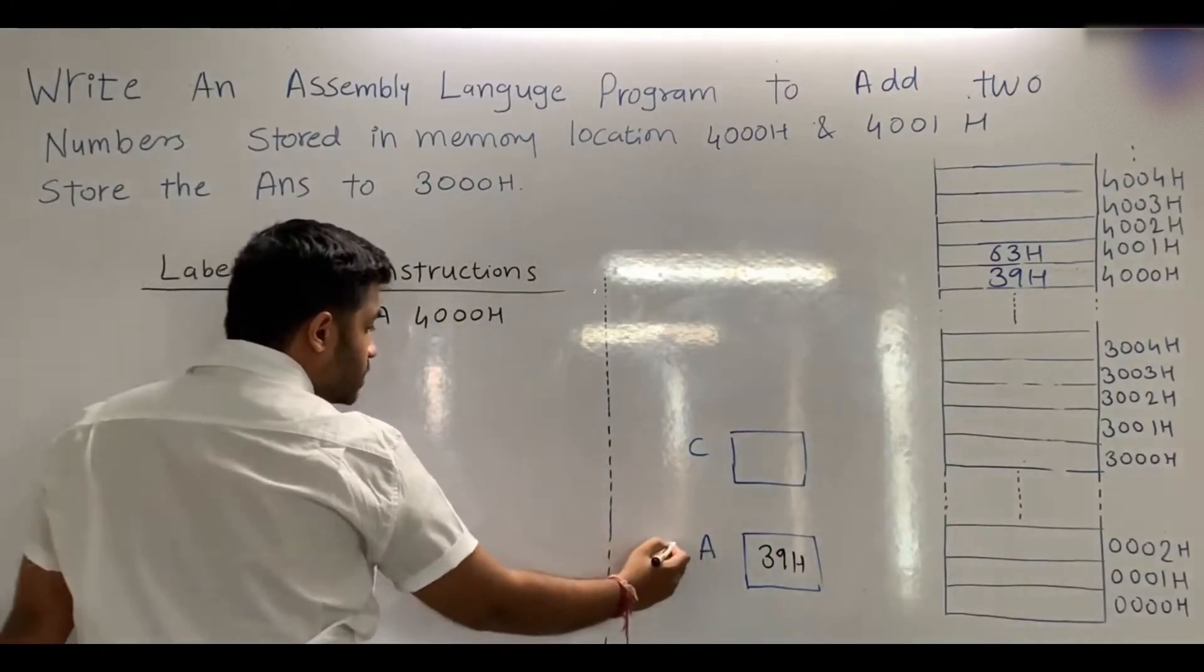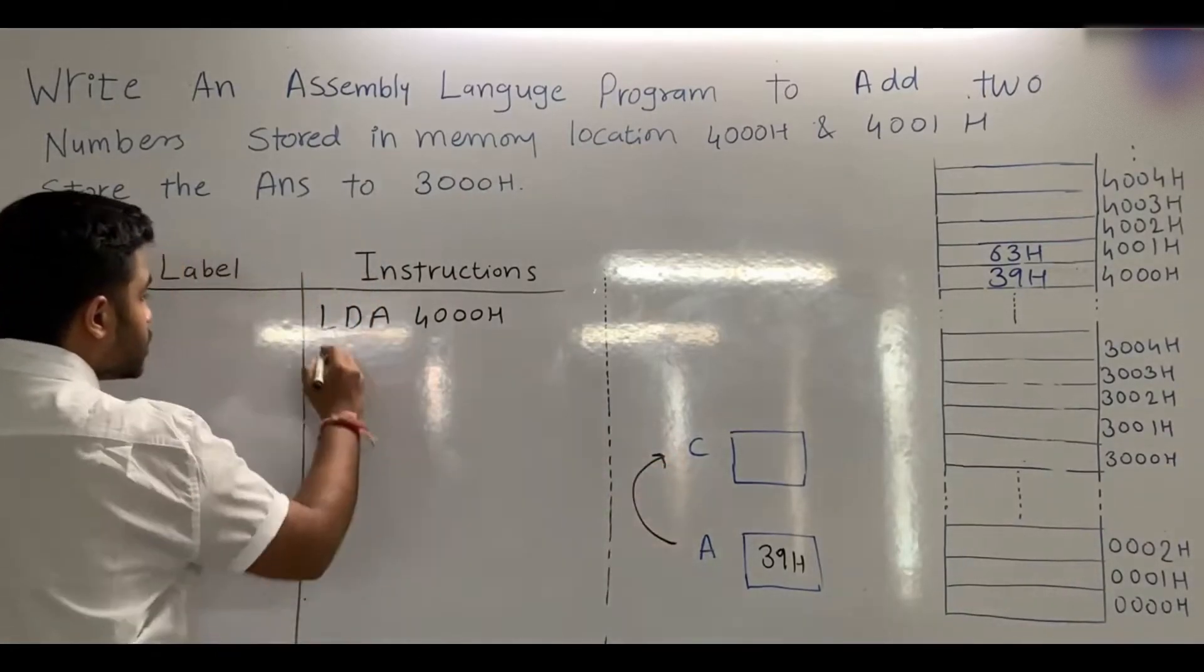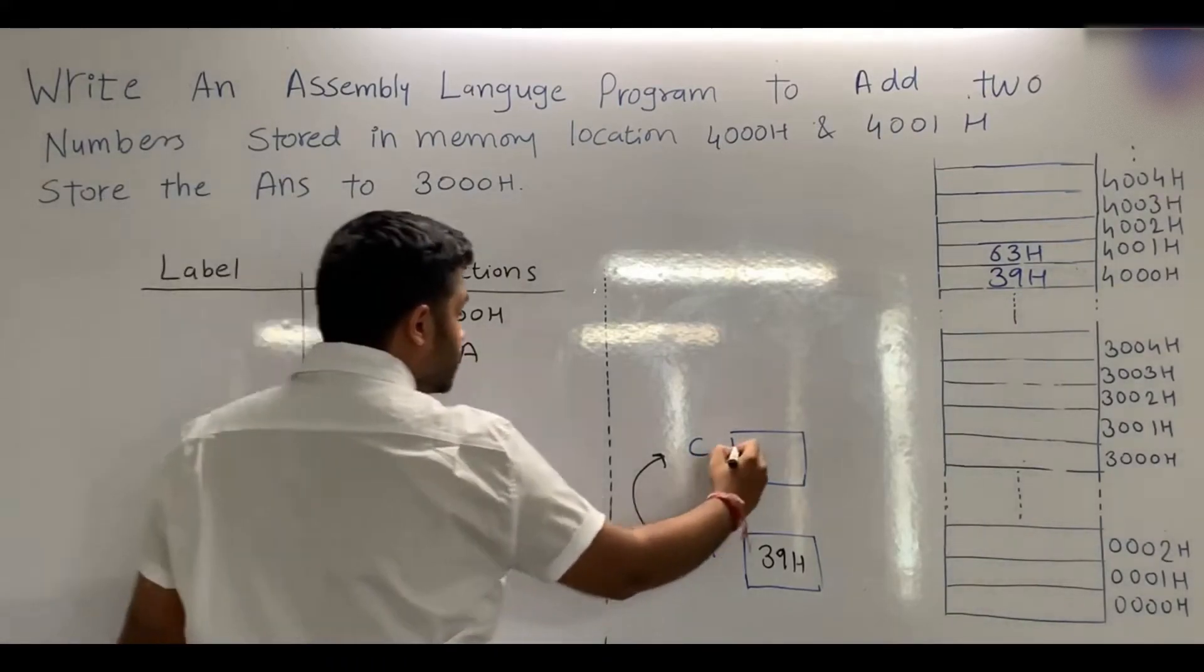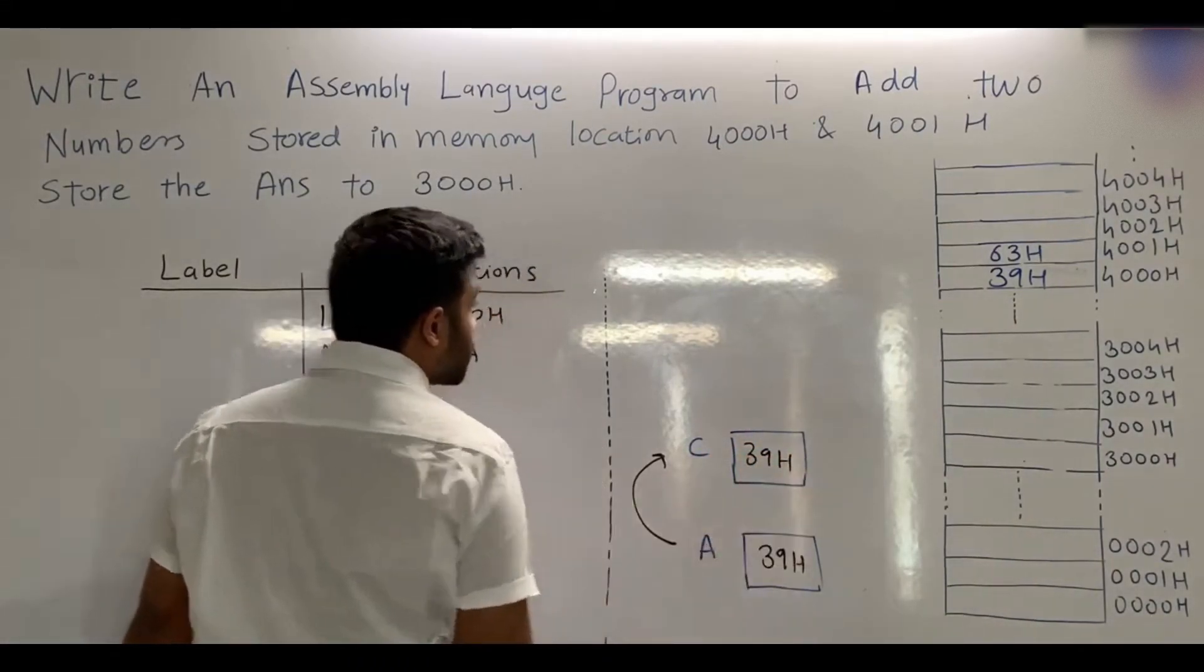After that, we will move this number to register C using the instruction MOV C,A. In the C register, 39H will be stored.